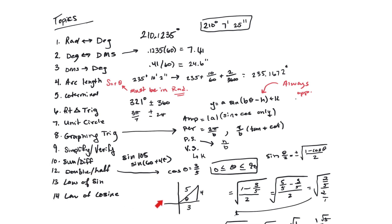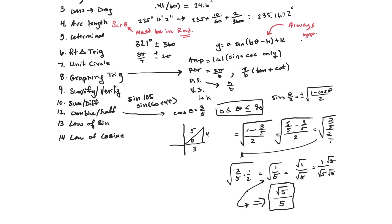Double and half angle identities: for example, if cosine of theta equals 3/5 and theta is between 0 and 90 degrees, find sine of theta over 2. Use the half-angle formula from the formula sheet. Since theta is in the first quadrant, plug cosine theta into the formula and work through the algebra, simplifying as far as possible since your answer choices will be in simplified form.